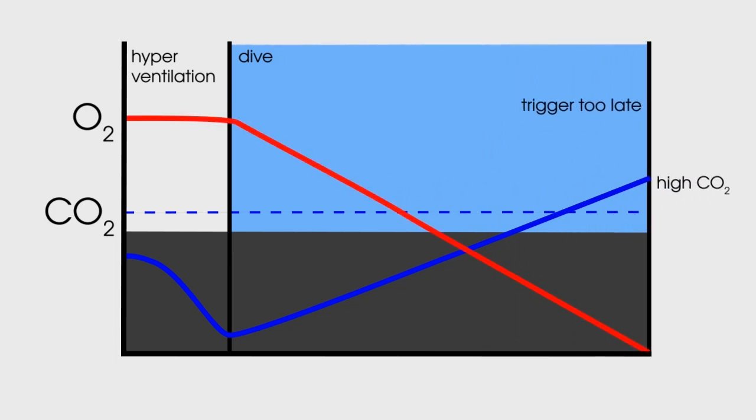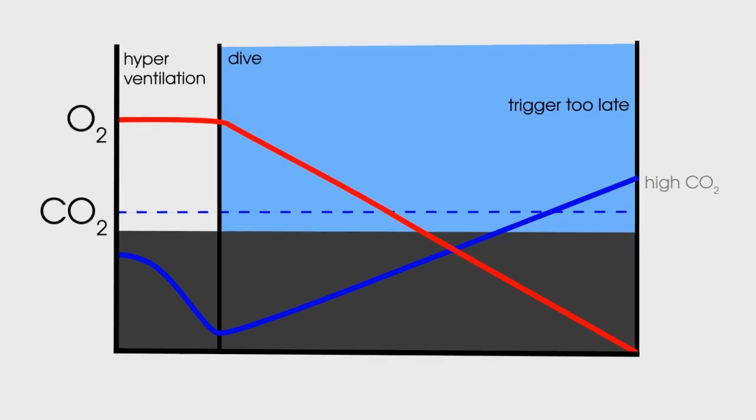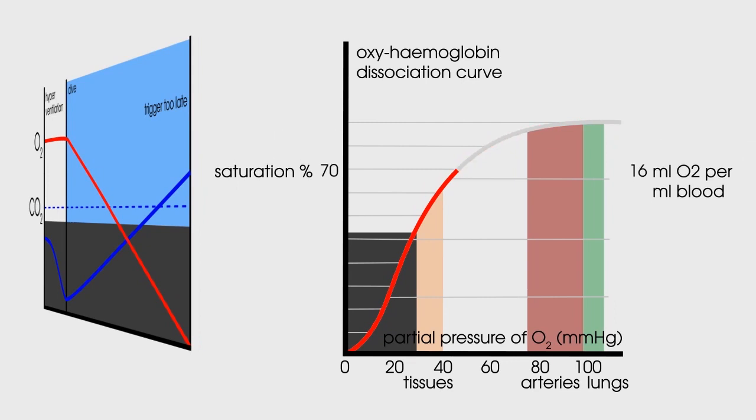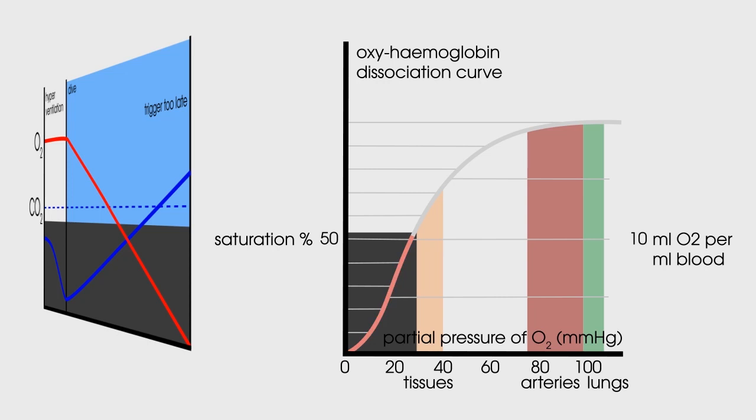Most body tissues can still function at these lower oxygen levels, but your brain, and importantly your consciousness, can't. The critical hemoglobin oxygen saturation required for consciousness is about 50%. Below this value, you're on really shaky ground, and most people will black out. If this happens underwater, you will drown. The take-home at this point isn't necessarily a moratorium on hyperventilation to prolong breath-holding, but an awareness of what it is you are actually doing physiologically, and the risks involved.